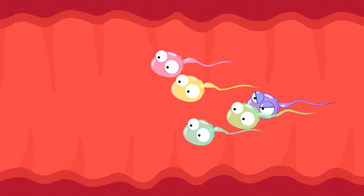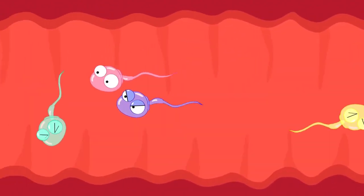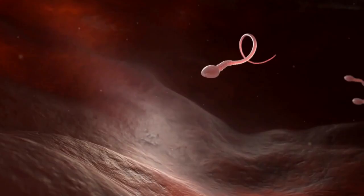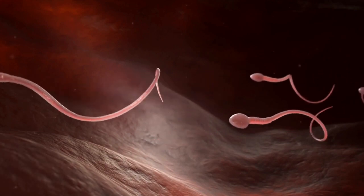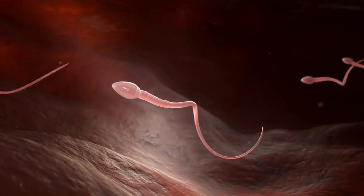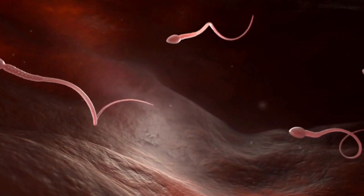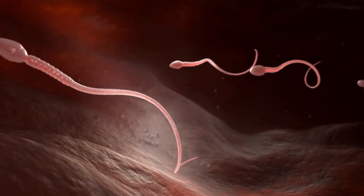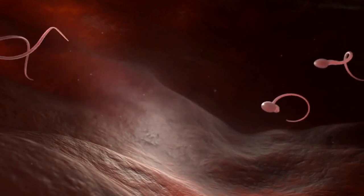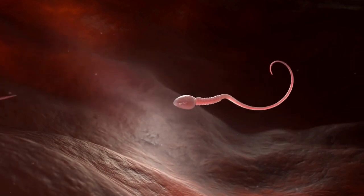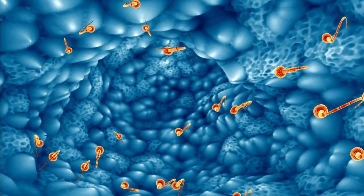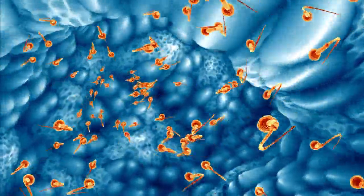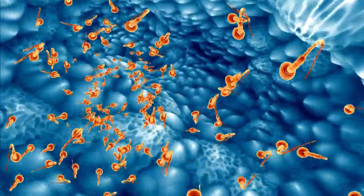The journey towards birth. The male and female pronuclei join together, creating a unique genetic code that determines various characteristics of the new life. At this moment, fertilization is complete and the single cell zygote begins its incredible journey. Guided by cilia in the fallopian tube, the zygote gently moves toward the uterus, where it will implant and grow for the next nine months until ready for birth.